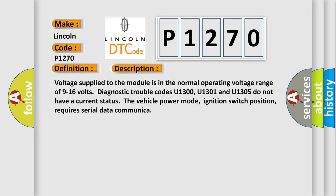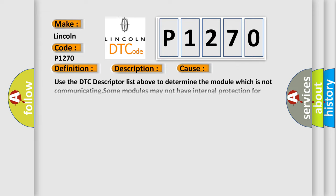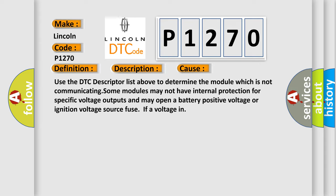This diagnostic error occurs most often in these cases. Use the DTC descriptor list above to determine the module which is not communicating. Some modules may not have internal protection for specific voltage outputs and may open a battery-positive voltage or ignition voltage source fuse IFR voltage in. The airbag reset website aims to provide information in 52 languages.